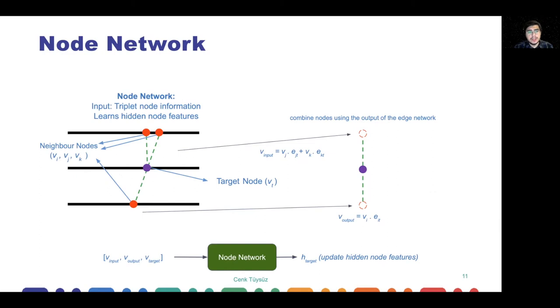Then this edge information is processed with the node network. The node network works on triplets of hits. As you see, now we have some values for these edges. With the edge information, we multiply the node information with this and combine them to construct hyper triplets. Then node network takes the input, output, and the target nodes, and processes them with the hybrid neural network inside to update the hidden node features. So now we have seen how they are working, but up until this point, you didn't see any progress made by us actually. Now we will switch to quantum computing and see how we update these models to work along with quantum computers.